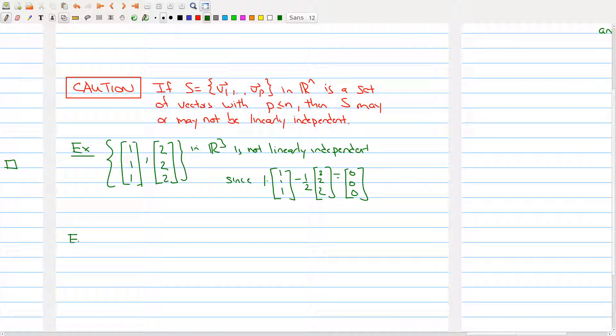And now let's look at the other example. We could have (1, 0, 0), comma (0, 0, 1). And this is in R3 is linearly dependent. Oh, it's not dependent, independent.